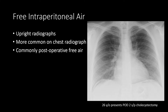You most commonly encounter free intraperitoneal air on upright radiographs. That's because the upright positioning of the patient allows the free air in the abdomen to settle under the diaphragms. That creates a clear contrast distinction between the diaphragm and the gas, and is most confidently detected in the right upper quadrant where the liver usually resides.